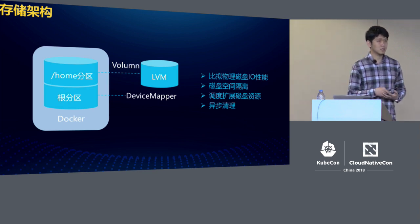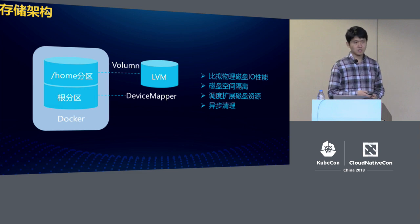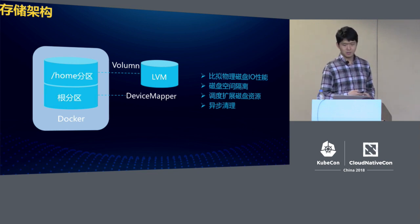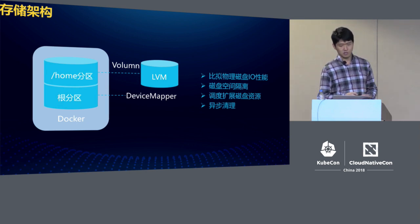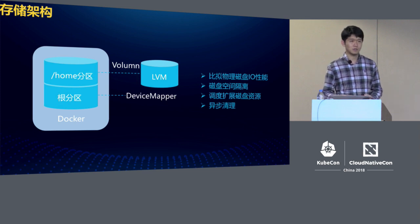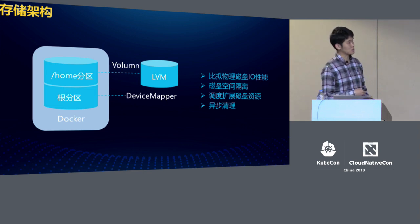For storage architecture inside Docker, we have several basic requirements. First, we need read-write capacity so we can achieve I/O capacity similar to a physical disk. Second, we want the disk space to be isolated — for instance, if we allocate a 100 gigabyte disk space, that space should be isolated and usable as a resource in the storage architecture.